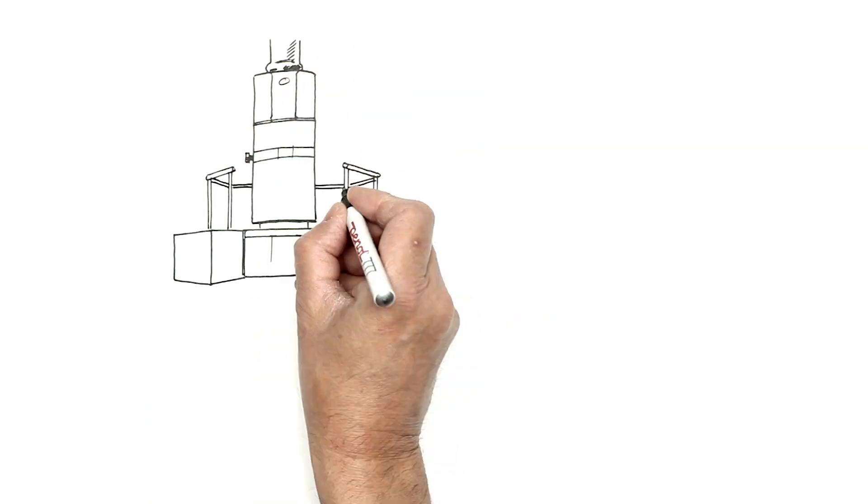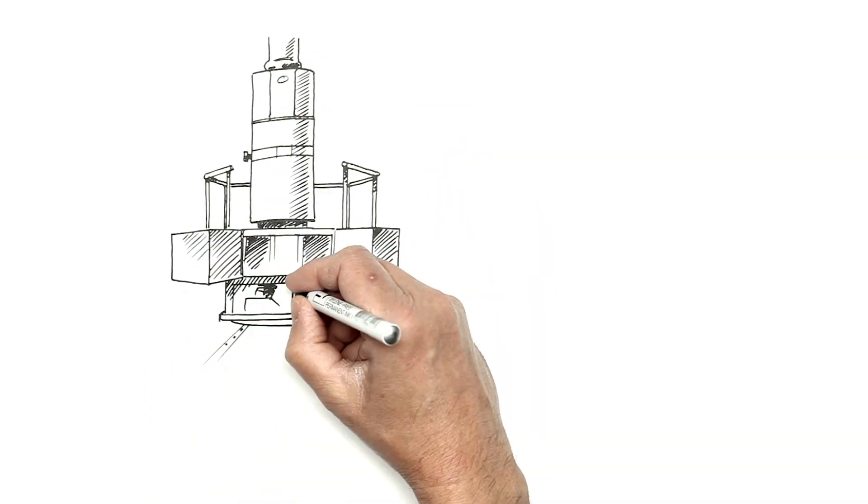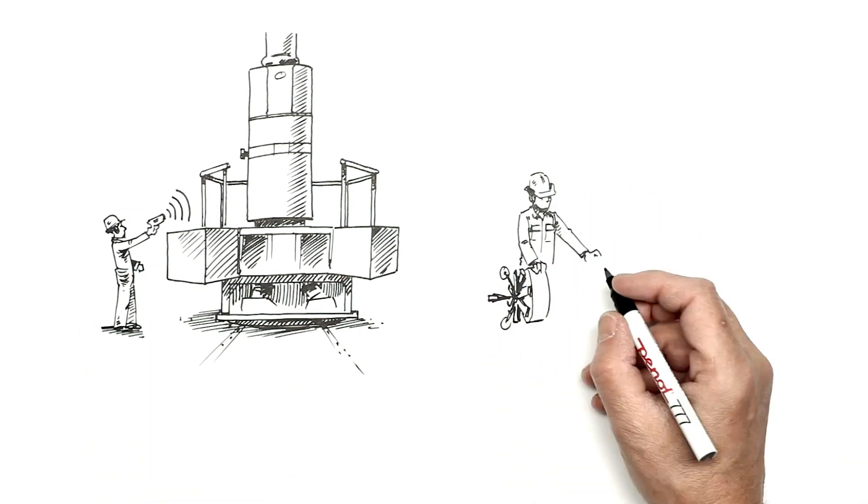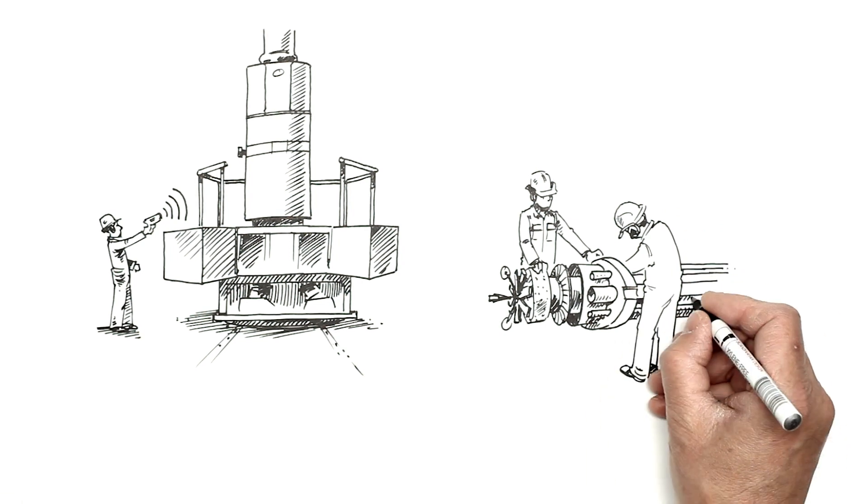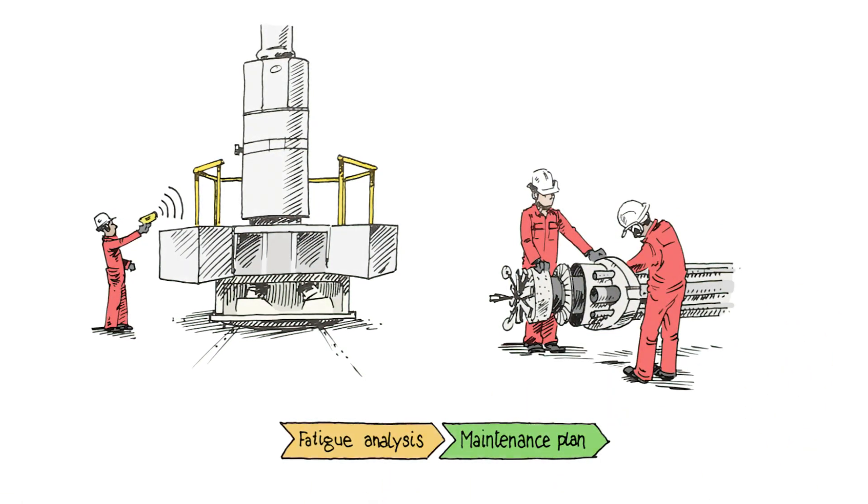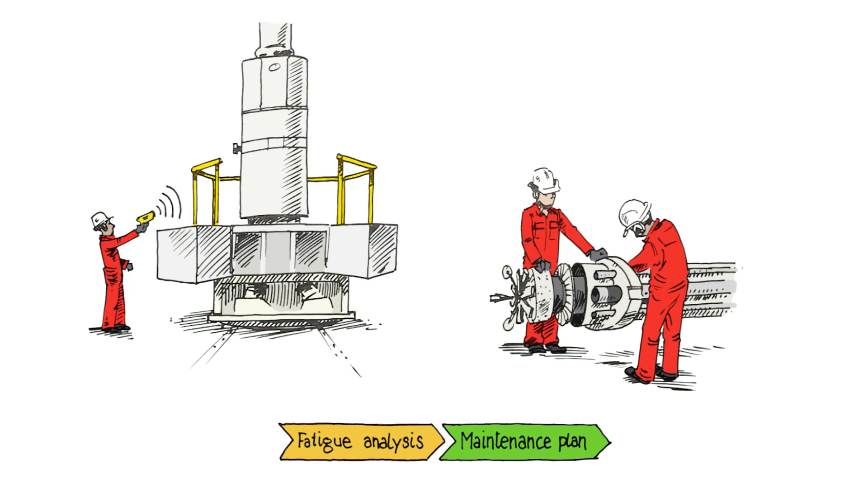Rikon gathers data from rig systems, corrosion and visual inspections. Based on the data it makes an automated fatigue analysis based on weather and actual loading per joint. From this data the system suggests which risers need maintenance and when.